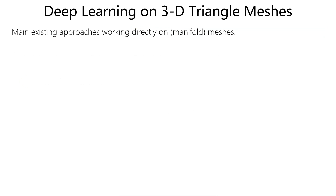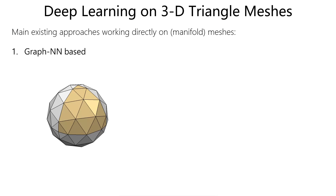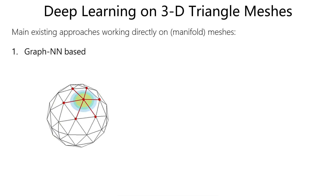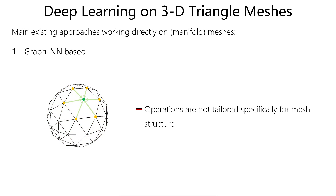We identify two main types of approaches that work directly with mesh data. On the one hand, methods based on graph neural networks, which consider meshes as graphs, and therefore define operations that are not tailored to their structure.